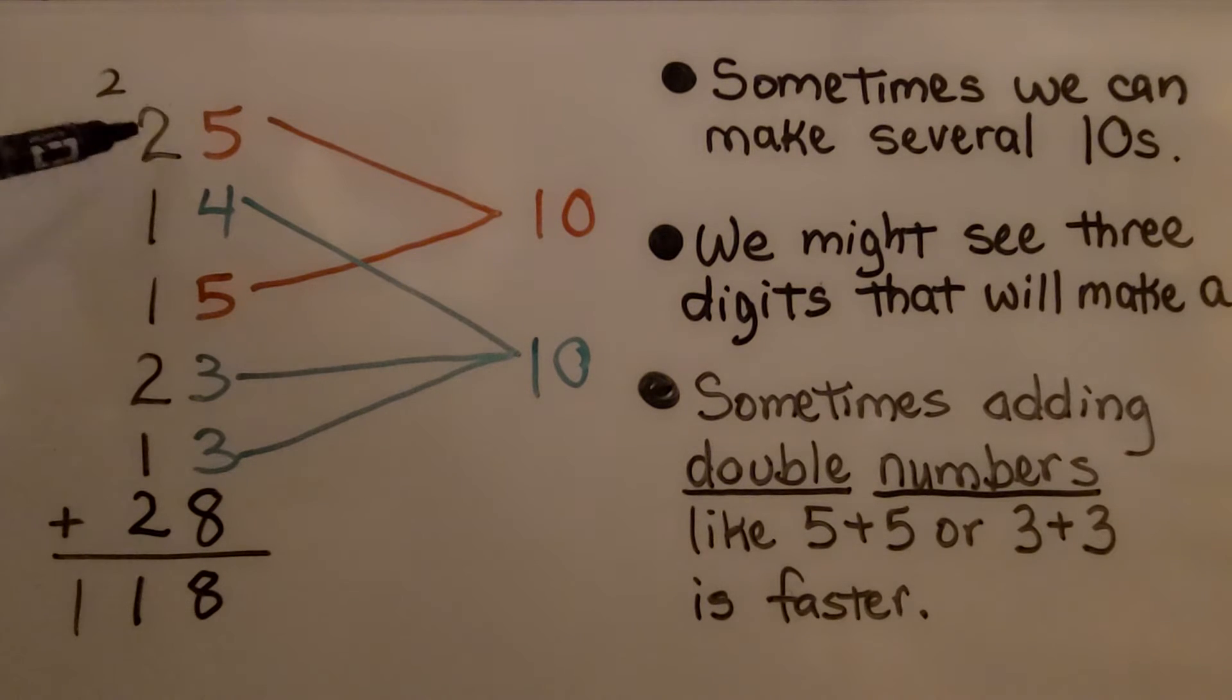Here we have 25 plus 14 plus 15 plus 23 plus 13 plus 28. We can make several tens. I see two tens that we can make. We have a 5 plus a 5. And we might see three digits that will make a 10. Here we have 4 and 3 and 3, that makes a 10.